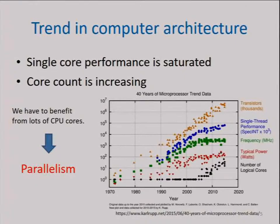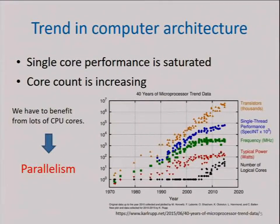This figure indicates the trend of processors. As you know, single core performance is saturated, as the frequency is saturated. On the other hand, transistor count is still increasing, which results in an increase in the number of cores. Therefore, we have to benefit from multi-core CPUs — that is, parallel processing.